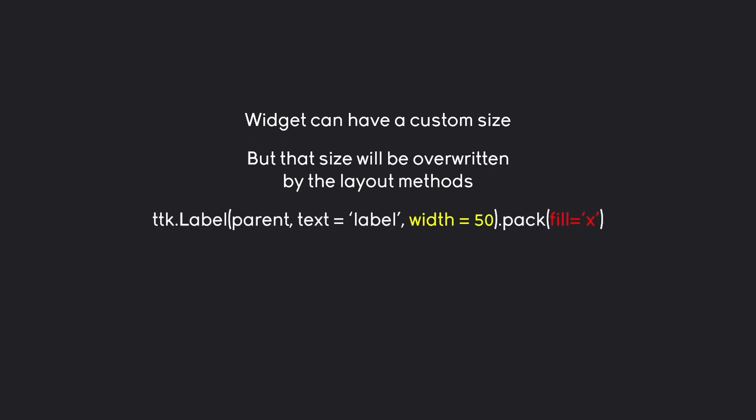For example, if we have something like this, we are creating a label. This label has some text, but much more important, we are giving this label a width. The specific width in this example is going to be 50. Really important here — this is not pixels. TKinter uses a really weird measurement system where this 50 is the width of 50 characters. It's kind of weird, but don't worry too much about it.